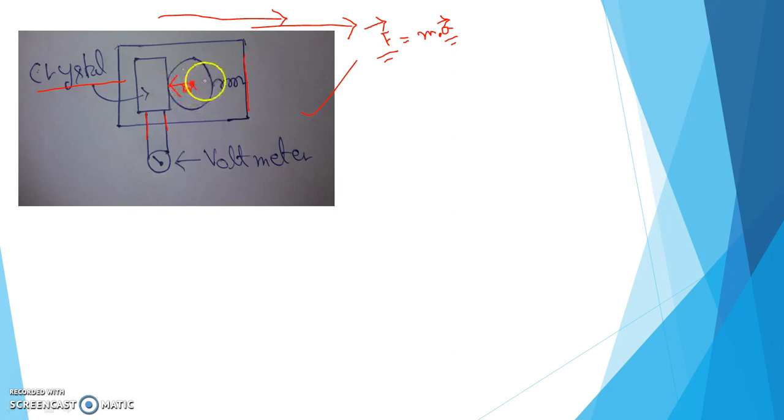So because of the pseudo force, the mass will get one acceleration in this direction. But see, the mass is in contact with the crystal. So as a result, mass will give one force on this crystal and the spring will somehow elongate if the mass moves in this direction. So force will be applied on the crystal.